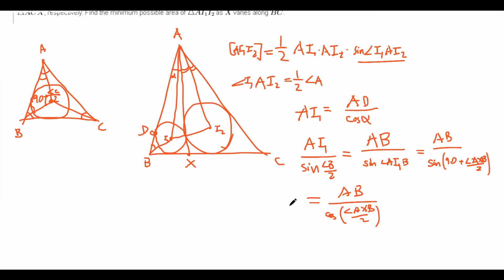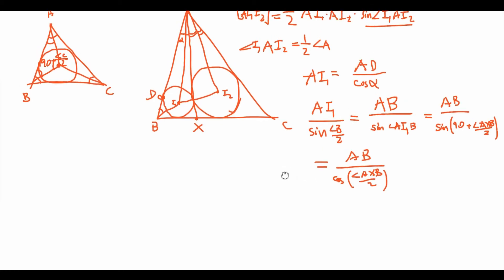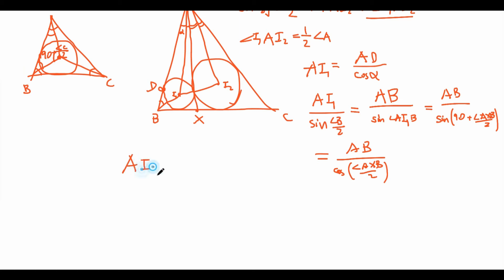So, sine of angle AI1B is actually equal to sine of 90 plus angle AXB over 2. And actually, what does sine of 90 plus angle AXB over 2 equal? Well, that actually just equals cosine of angle AXB over 2. So, we can take a look at AI2 now, and indeed, AI2 is going to be almost the exact same calculation. So, let's just mirror that calculation to get that AI2 over sine of angle C over 2 is going to equal AC over cosine of angle AXC over 2.